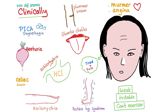Clinically, iron deficiency anemia like any other anemia presents with fatigue and pallor. Sometimes there is angina, a murmur, weakness, irritability, and exercise intolerance. Other associations include Plummer-Vinson syndrome with esophageal webs, glossitis, and cheilitis — inflammation of the tongue and lips.